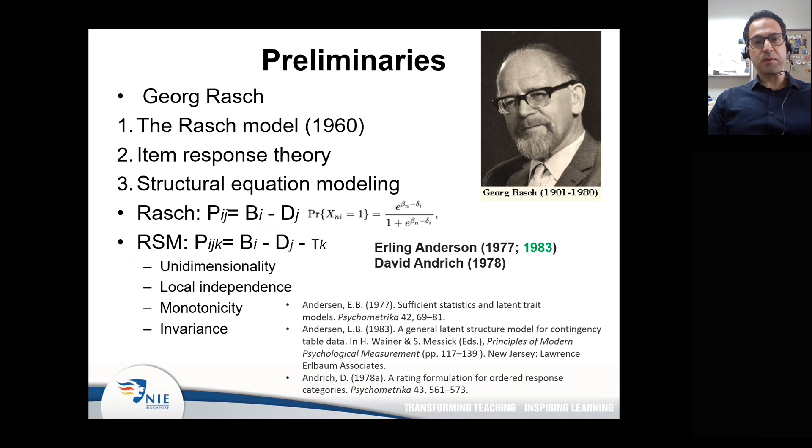As the name implies, the Rasch model was developed by a statistician and mathematician from Denmark called Georg Rasch around 1960. The first model developed was known as the Rasch model because that's the most basic form of the Rasch family models, based on which a lot of other models were developed later.